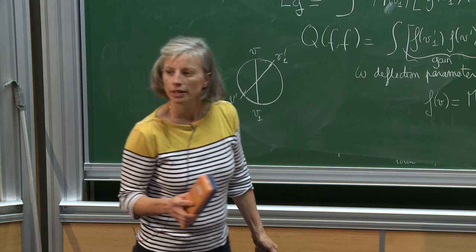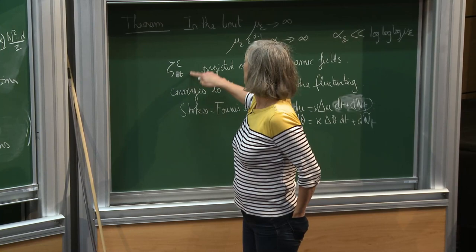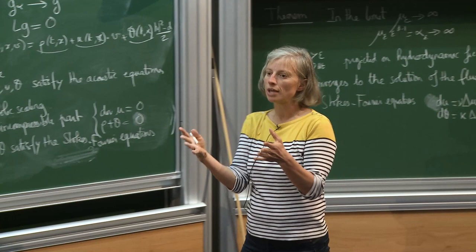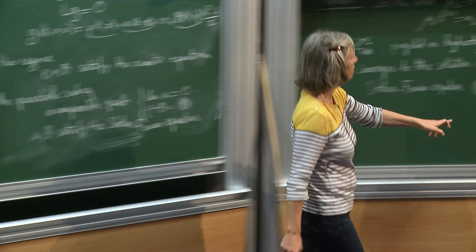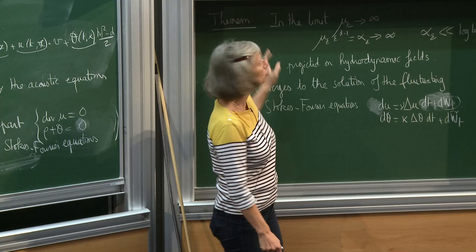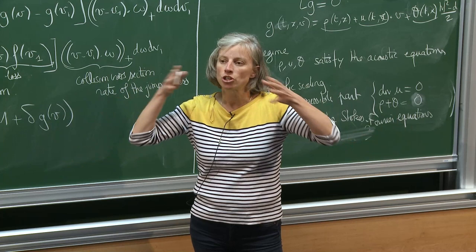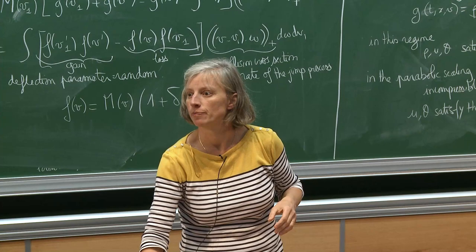For projecting on hydrodynamic fields, instead of looking at any test function, we restrict to test functions of the form φ(x)·(|v|² − (d+2)/2) to get θ, and φ(x) divergence-free dotted with v to get u. So instead of all possible test functions, you prescribe the v-dependence — it's really a projection by duality.